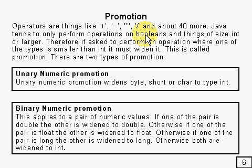So obviously, if one of the things you're trying to operate on is smaller than that — so it's a byte, a short, or a char — then you've got to just think about it. This is where we come to something called promotion. What happens is it's automatically widened, and that's called promotion.